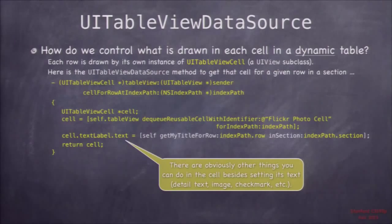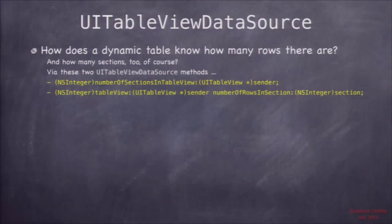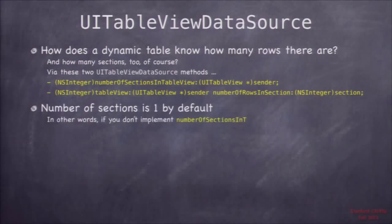We just set this UITableViewCell to look like we want based on what information is coming out of the database for that row and section, then we return the cell and the table view uses it to draw that row. The other two methods are how many sections and how many rows. If you don't implement numberOfSectionsInTableView, it has a default of one — so if you don't implement it, it's all one big section.